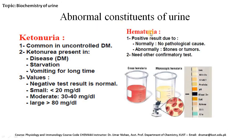Another situation is hematuria. Hematuria is a positive result due to normally no pathological cause — normally stones or tumors — and needs other confirmatory tests. When the color of urine is grossly red, it is indicative of gross hematuria, while in cases where the color is less obvious, this is a situation called microscopic hematuria.